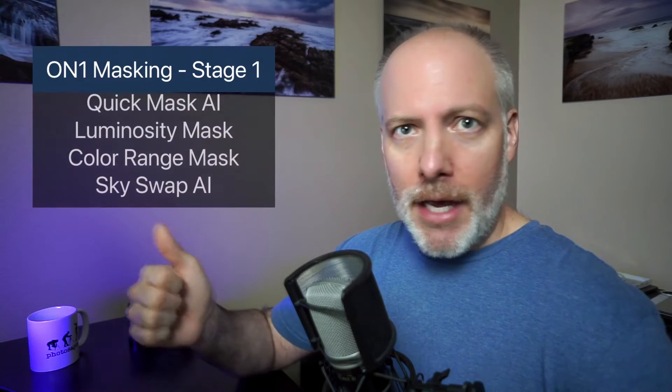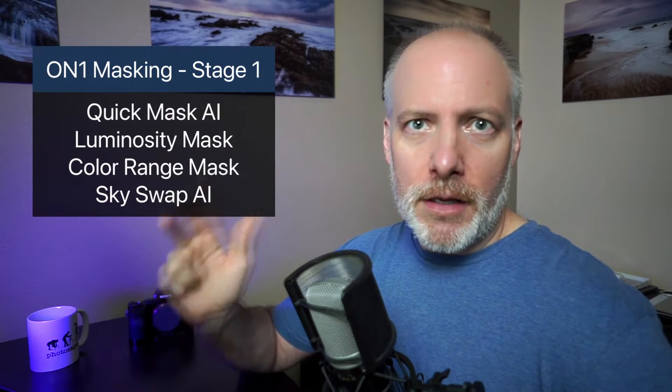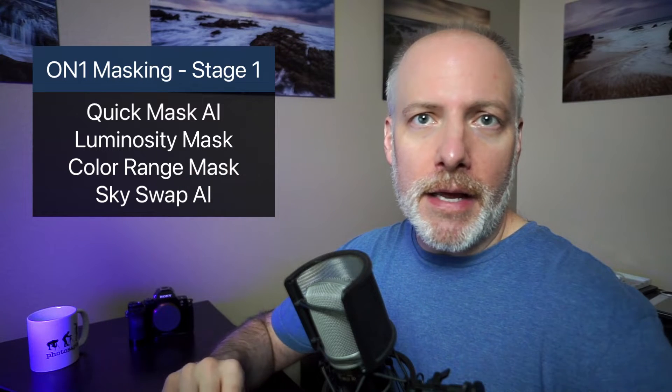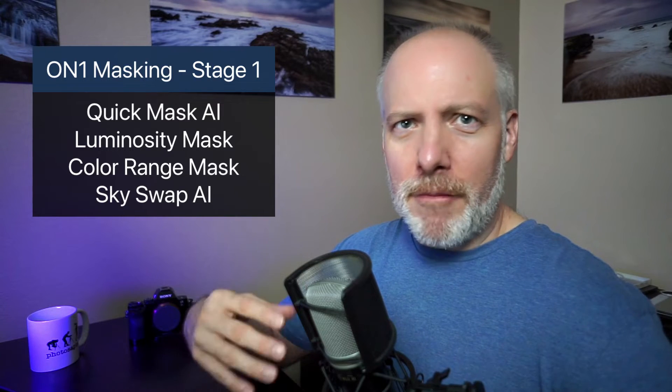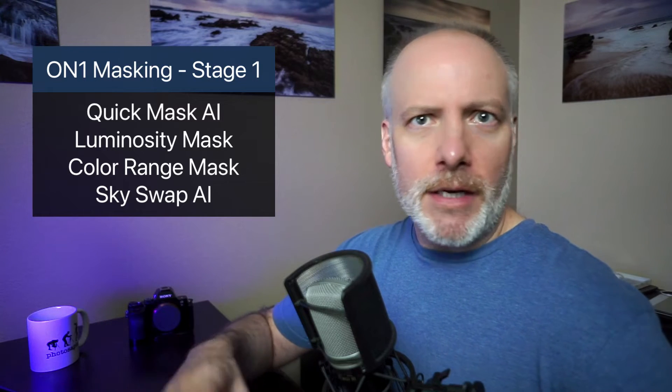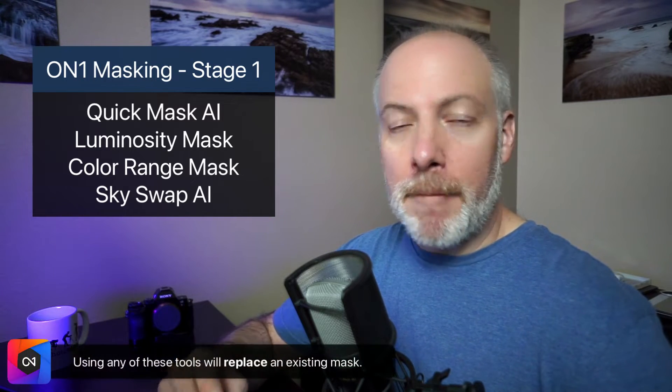When you're approaching a masking job, it's best to start large and whittle your way down. Here's the breakdown — masking in three steps. The first step is the very broad overall mask, and I'm going to use one of four tools to do that: AI Quick Mask, Luminosity Mask, Color Range Mask, or Sky AI if you're in Photo Raw. Any one of those four tools will clobber any other mask you've already done. So that's your starting point.